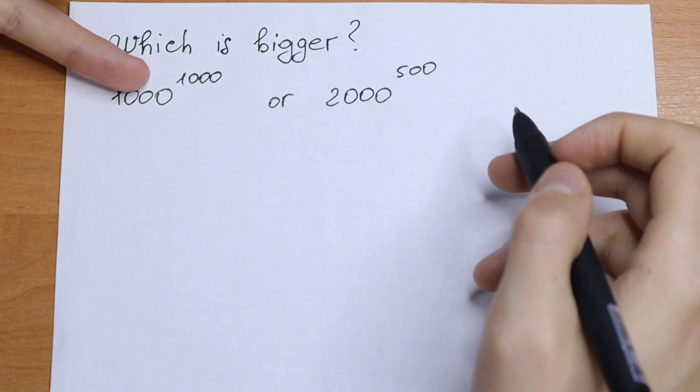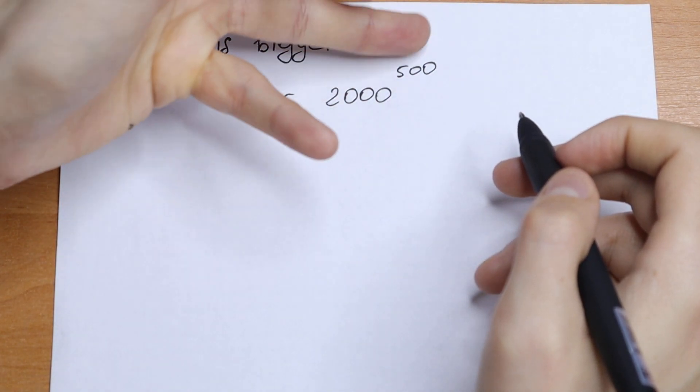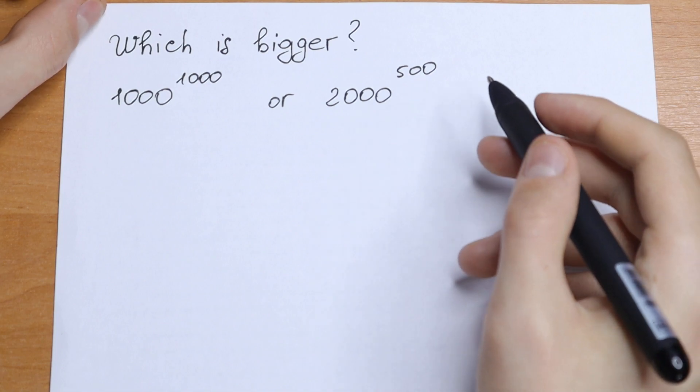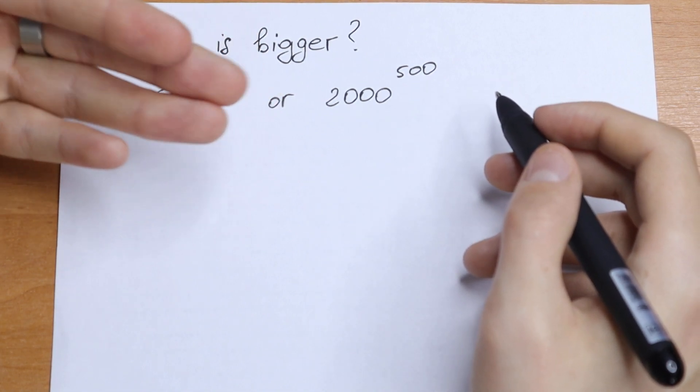Which one is bigger, 1000 to the power 1000 or 2000 to the power 500? How can you prove it, how can you solve it?